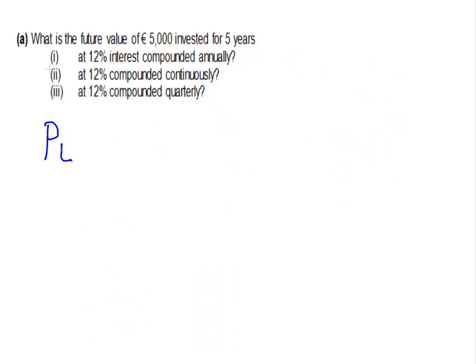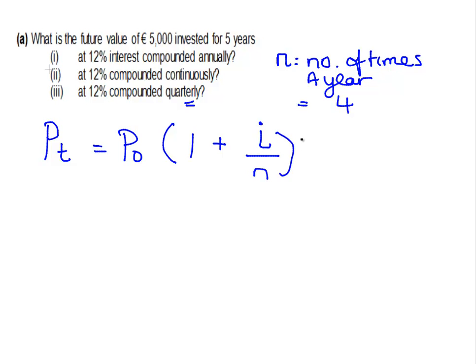And it's as follows. Pt, the future value, equals P0 by 1 plus i. And what I'm going to do here is add in a number of times a year. And here, when we compound quarterly, it's going to equal 4. So 4 is the number of times it gets compounded quarterly. So I'm going to divide i by n. And then we're going to put that to the power of t times n. Where t is the number of years. And n is the number of times per year we would compound our interest.